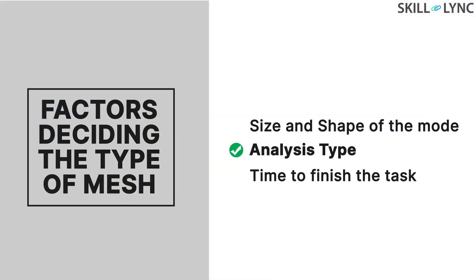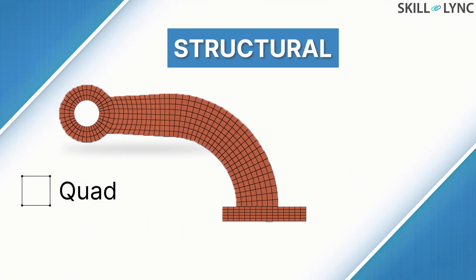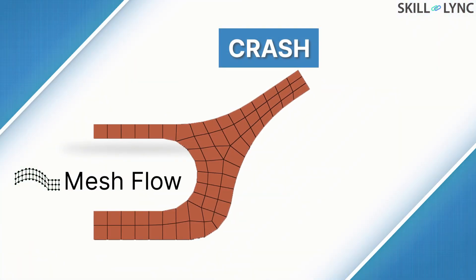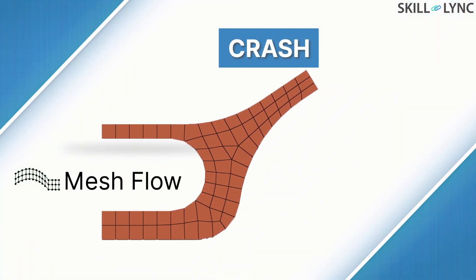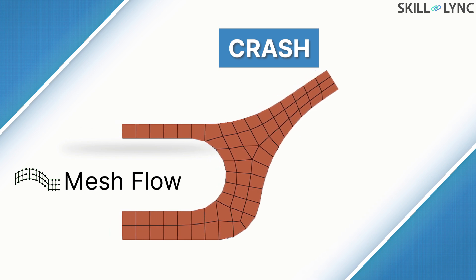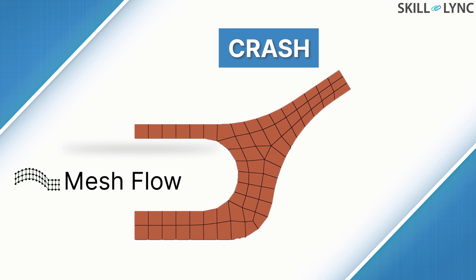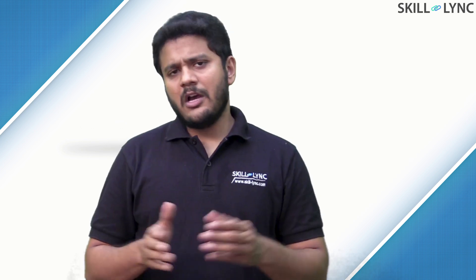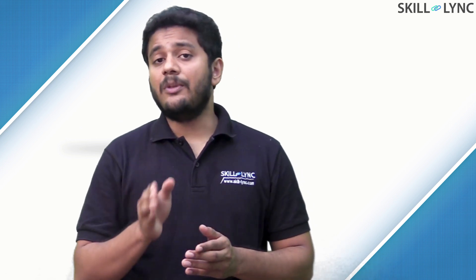The second factor which determines the type of mesh is the analysis type. For structural and fatigue analysis, quads and hex elements are preferred. For crash and non-linear analysis, we still try to get as many quad elements as possible but we focus on something called mesh lines — we will talk about this later. For casting simulations, triangular elements are preferred over quads. The reason for preferring one element over the other generally boils down to the balance between result accuracy versus simulation time.